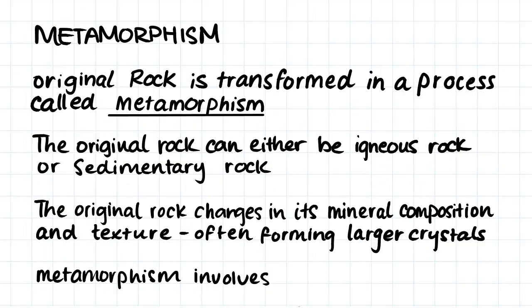To define metamorphism: metamorphic rock forms when original rock is transformed in a process called metamorphism. This original rock can either be igneous rock or sedimentary rock. The original rock will change in its mineral composition and texture, often forming larger crystals.